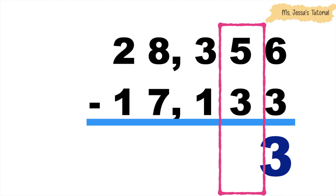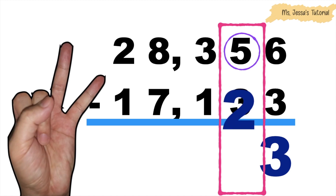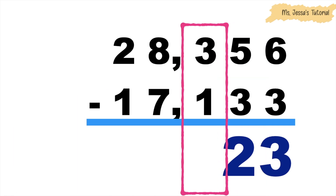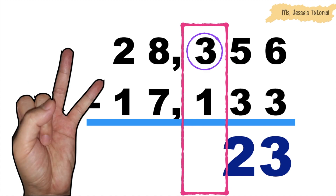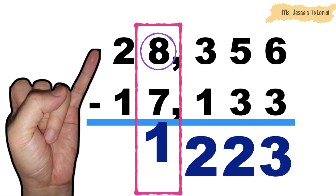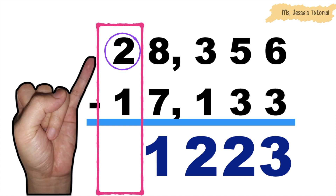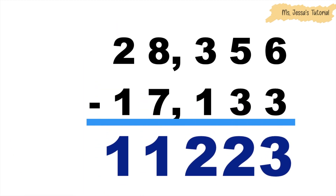Let's proceed to the tens place. 5 minus 3. 5 on your mind, we're going to count backwards until we reach 3. 5, 4, 3. So 5 minus 3 is equal to 2. Then let's proceed to the hundreds place. 3 minus 1. 3 on your mind, let's count backwards until we reach 1. 3, 2, 1. So 3 minus 1 is equal to 2. How about 8 minus 7? 8 on your mind. 8, 7. So 8 minus 7 is equal to 1. Let's proceed to the ten-thousands place. 2 minus 1. 2 on your mind. 2, 1. So 2 minus 1 is equal to 1. The difference is 11,223.